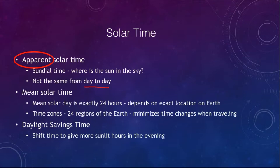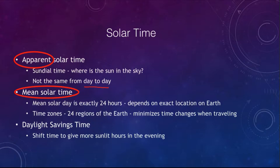Solar time can change a little due to the Earth's motions. What we actually use on Earth is mean solar time, where the mean solar day is exactly 24 hours — that is the average. We also use time zones on Earth, which means time is not the same everywhere on Earth simultaneously.